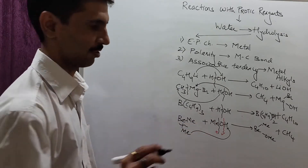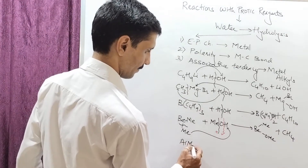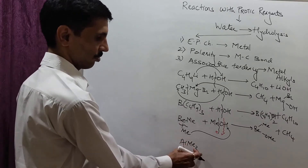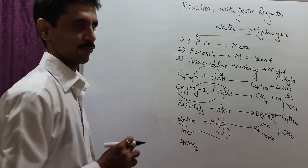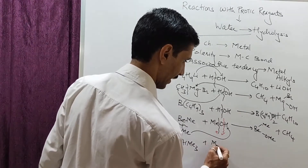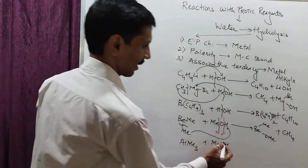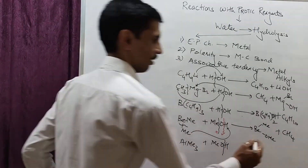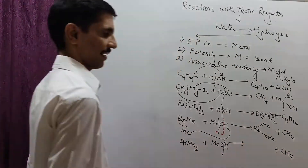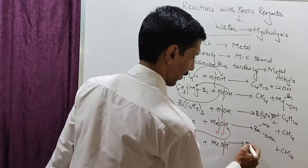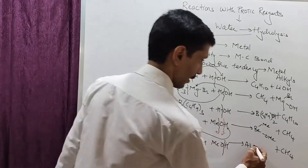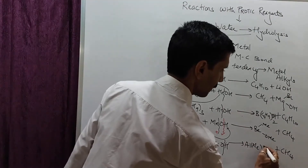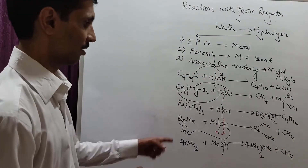Similarly, for trimethylaluminium, Al(Me)₃ — aluminium has valency three, so three methyl groups. Treated with MeOH, the bond breaking proceeds the same way: only one methyl combines with H⁺ to give methane (CH₄). The remaining major product is Al(Me)₂(OMe) — aluminium with two methyl groups and one methoxy group.